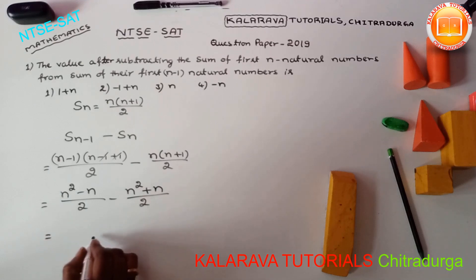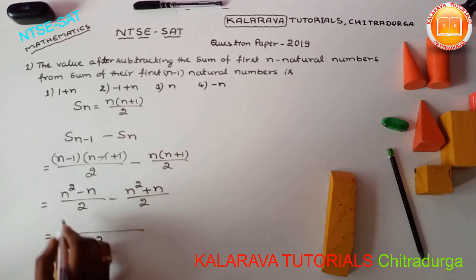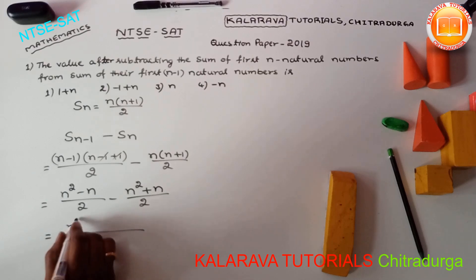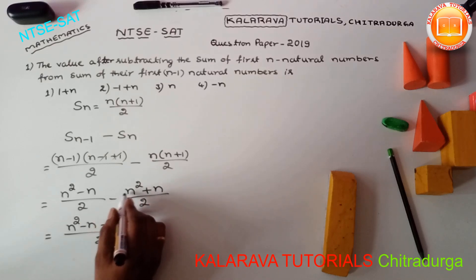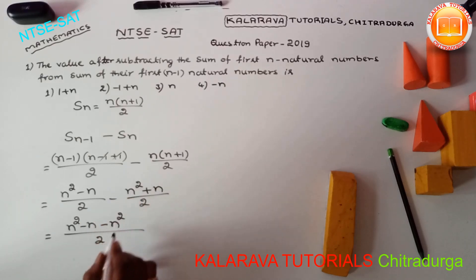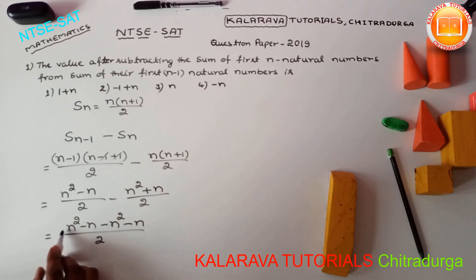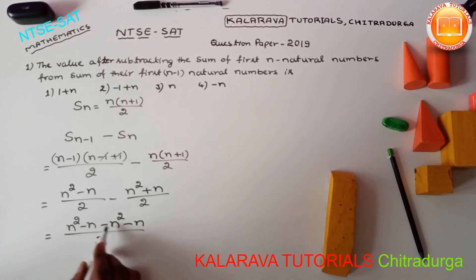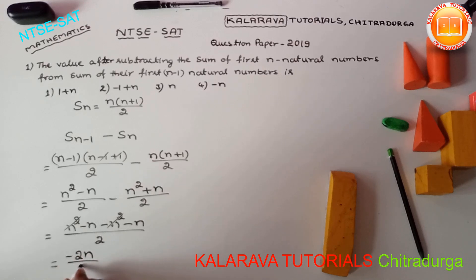Both denominators are the same, so we take the LCM as 2 and write the numerator as it is: N squared minus N. Then applying the minus sign to the second term gives minus N squared minus N. The N squared and minus N squared cancel. Both remaining N terms have a minus sign, so adding them gives minus 2N divided by 2.